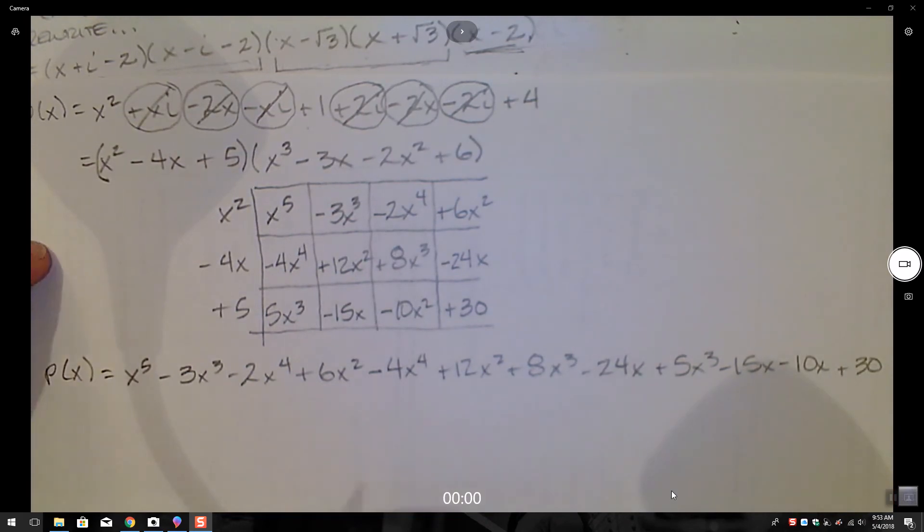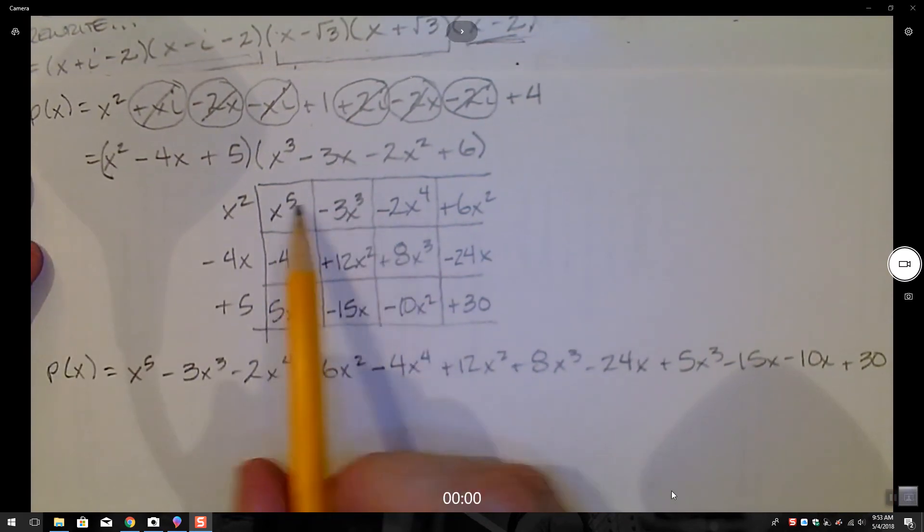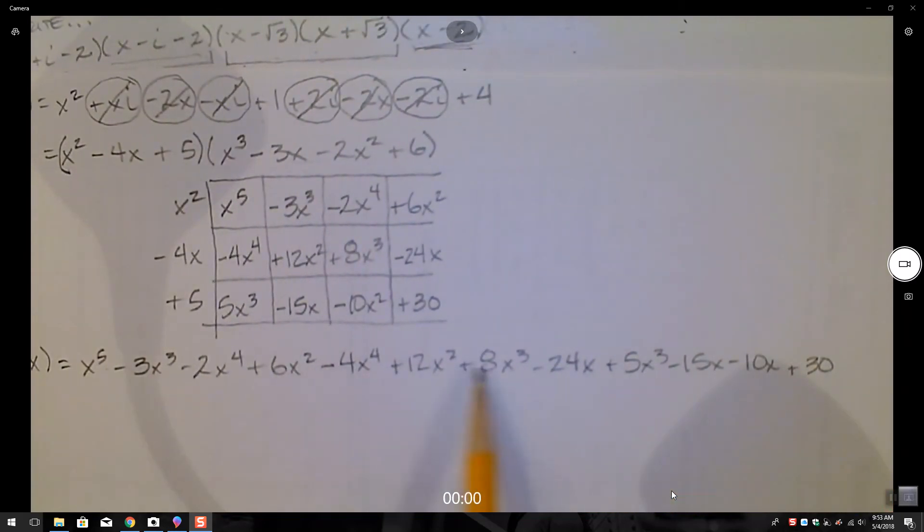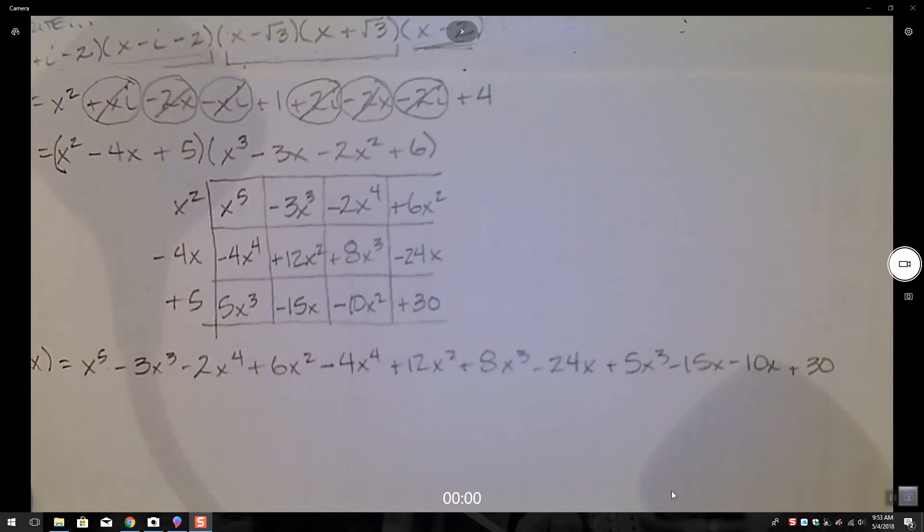That's ridiculous. I should have 4 times... I should have 12 terms. Let's see. 1, 2, 3, 4, 5, 6, 7, 8, 9, 10, 11, 12. Good. And hopefully I kept my positives and negatives straight.